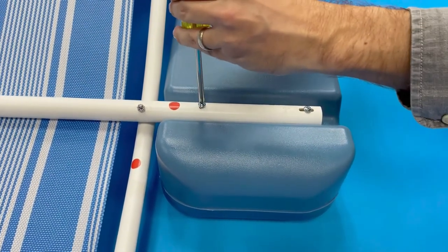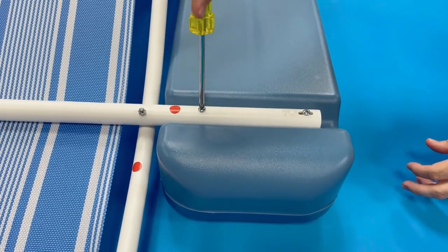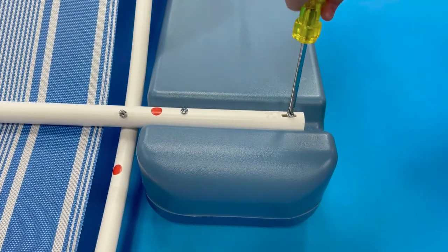Repeat this step on the four holes closest to the seat frame. Go back and tighten all bolts.